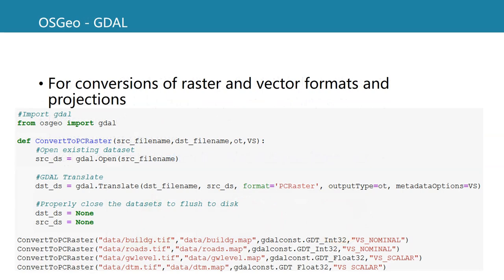We already mentioned GDAL before. It is accessible through the OSGeo library, so we can use the GDAL module from the OSGeo package. Here you can see how that works to convert GeoTIFFs to PCRaster format using GDAL translate.